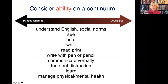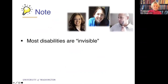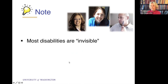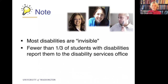It doesn't matter why people have different abilities — they just do, as a normal part of the human condition. Another important thing: most disabilities are invisible. Many faculty feel if they don't see anyone in class who looks like they have a disability, then they don't. But most disabilities are invisible, like learning disabilities, attention deficits, and autism spectrum. Fewer than one third of students with disabilities report them to the Disability Services Office.